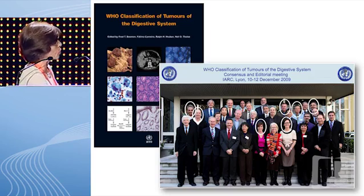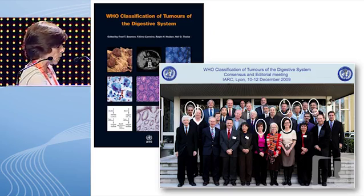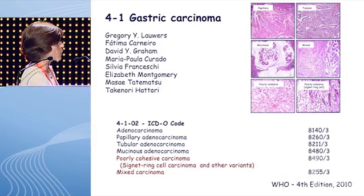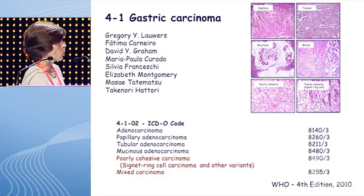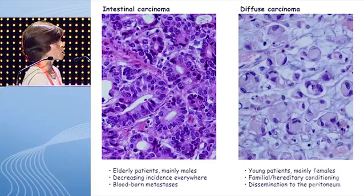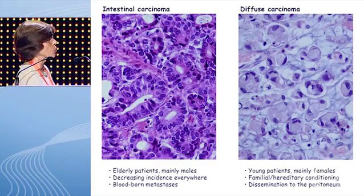Putting together all these new findings, the new WHO classification book — developed with a large group of experts from the United States, Japan, and Australia — now recognizes papillary, tubular, and mucinous adenocarcinomas, as well as the new category of poorly cohesive carcinomas. If the tumor has a pure signet ring cell phenotype you may still call it signet ring cell carcinoma; otherwise it should be designated as poorly cohesive carcinoma, not otherwise specified. The last WHO edition published in 2010 also now formally recognizes mixed carcinoma of the stomach as a specific entity with distinct behavior.